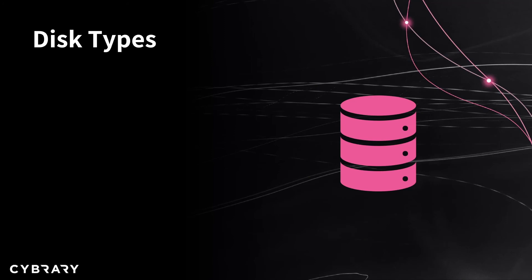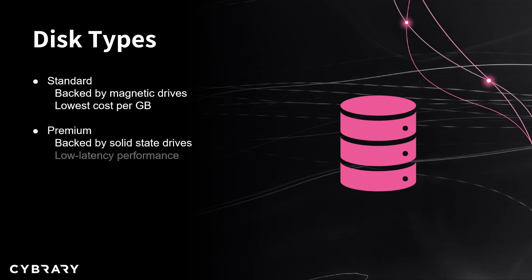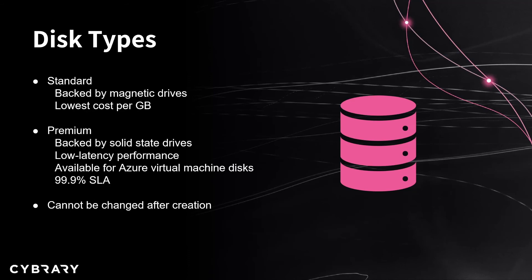Let's talk about disk types. The first one we have is our standard disk type. This is backed by traditional magnetic drives, and it's going to give you the lowest cost per gigabyte. We also have a premium disk type option, which is backed by solid state drives and gives you low latency performance. However, premium disks are only available for Azure Virtual Machine disks, and if you put an Azure Virtual Machine disk inside premium storage, you'll have a 99.9% SLA for those disks. Unlike some other options, you cannot change the disk type after it has been configured for the storage account, so be sure to plan ahead and choose the right option on creation.